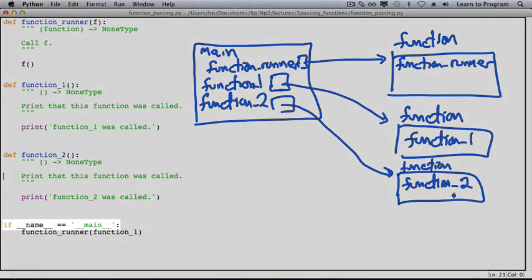Then we reach the name equals main if statement, and inside that is a call on functionrunner. To execute the function call, we evaluate the argument. That's just the memory address of the function object.